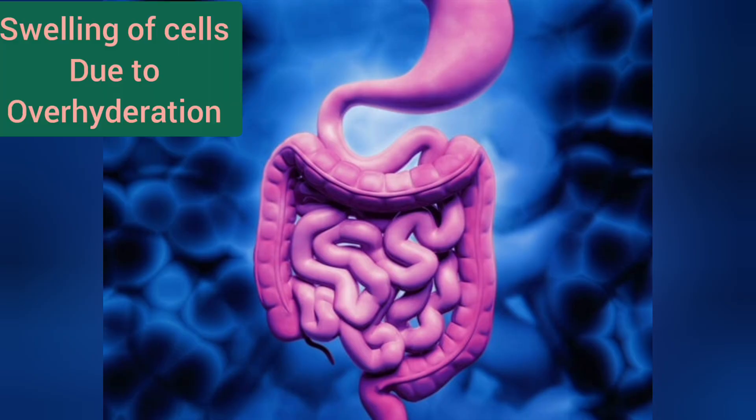Swelling of your cells due to overhydration can increase pressure in the physical structure of your body. Swelling of the neurons and cells in your central nervous system can cause pressure in your brain, which can lead to symptoms resembling brain damage and have negative effects on your health.